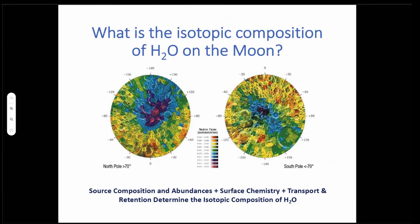Coming back to the composition of the moon, ultimately, the composition of water, but other volatiles I would argue, is going to come down to the source of the composition of the sources and the relative abundances of these sources, plus the convolution of surface chemistry, transport and retention in the moon's atmosphere.